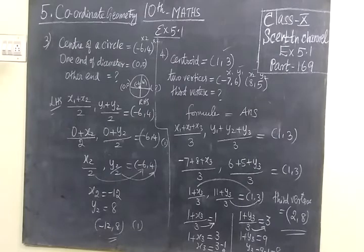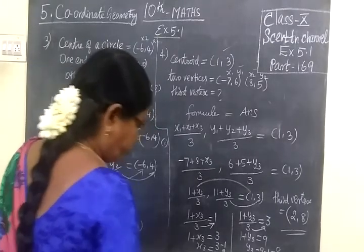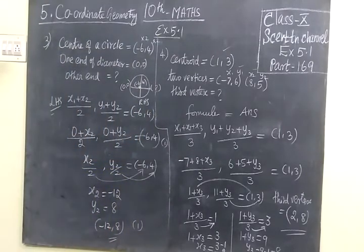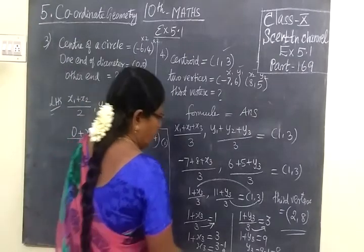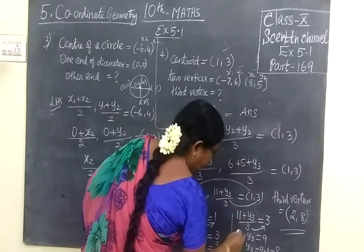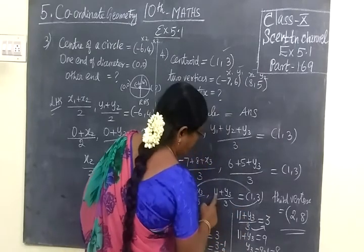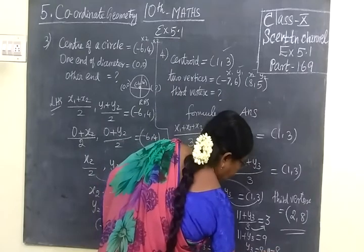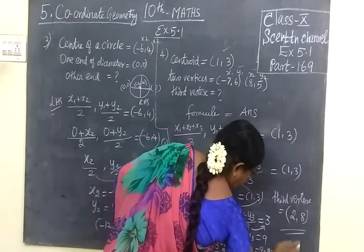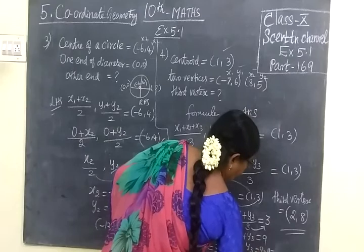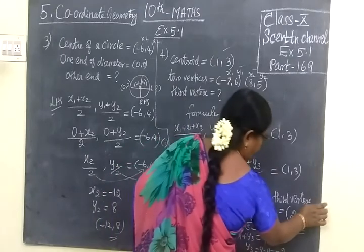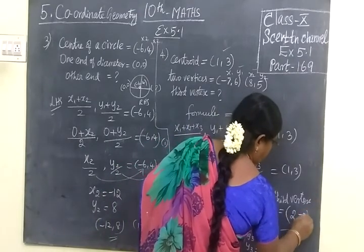Now we check the answer. For third vertex is equal to (2,-2). Here the answer is -2. So 6 plus 5, what do you think we have done? 6 plus 5 is 11. I have written 1, sorry. Here 11, because 11 plus y3. So 11, here you write 11. So 9 minus 11 is -2. So the answer is (2,-2).